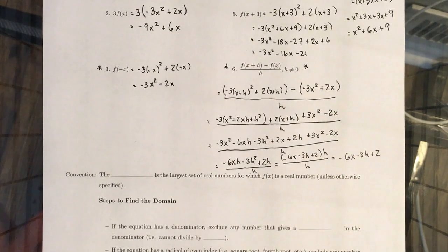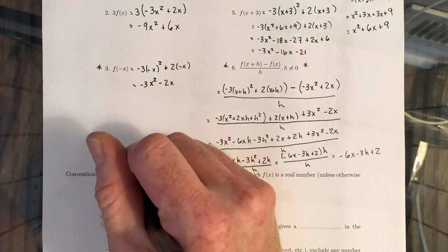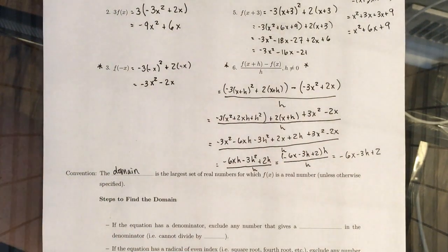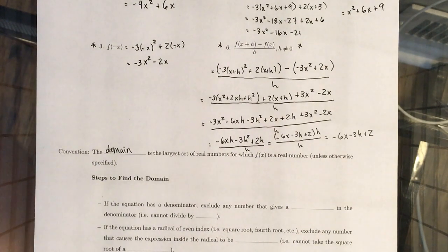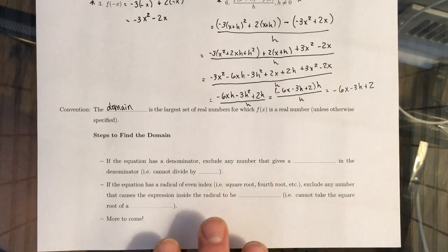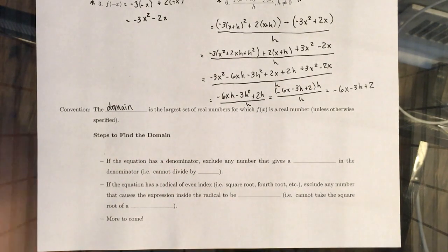We're going to take a convention that the domain of a function is going to be the largest set of real numbers for which f of x is a real number. Whatever that means. We'll go into how to find domains. Unless otherwise specified. So, for example, if you're dealing with a function that uses time as an input, negative time doesn't make a whole lot of sense. And so your domain is going to be positive time values. But for the general situation, let's talk about how to find domain.